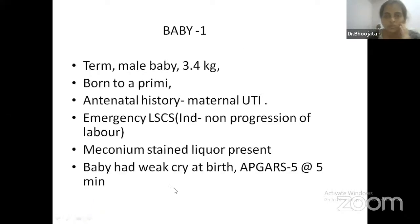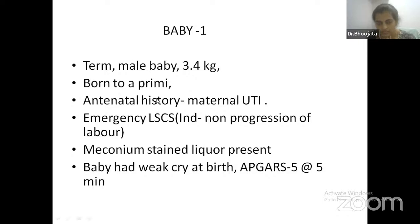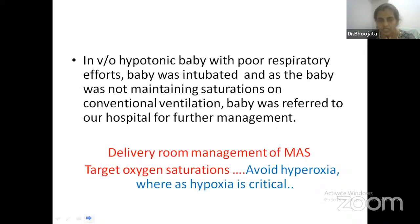This is your baby — term male, 3.4 kilos, born to a primae. Antenatal history: the mother had urinary tract infection. The baby was born by emergency section due to non-progression of labor. At the time of delivery, meconium-stained liquor was noted. After delivery, the baby had a weak cry with an Apgar of 5 at 5 minutes. The baby was flat with poor respiratory efforts. Anyone would like to comment on delivery room management for meconium aspiration syndrome?